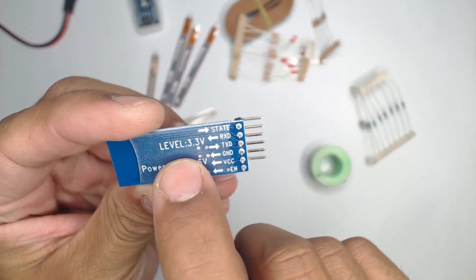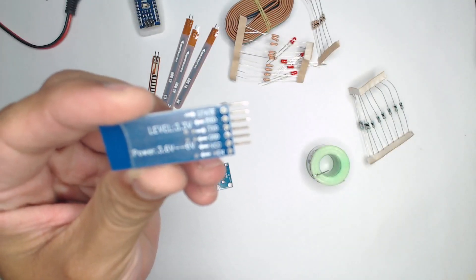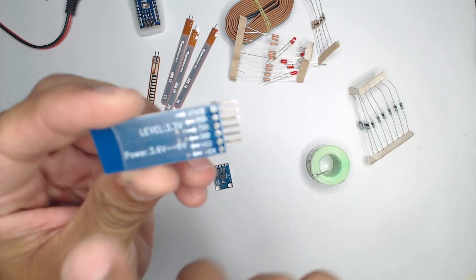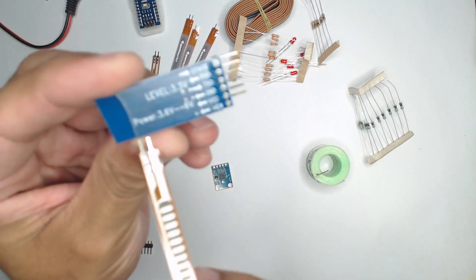As you can see, it has the serial interface and it supports 3.3 level. So you need to be very careful - the power is mentioned to be in the range of 3.6 to 6 volts, but the RX and TX levels are at 3.3 volts.